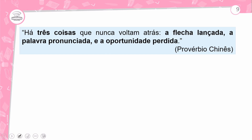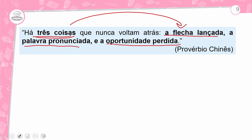Há três coisas que nunca voltam atrás: a flecha lançada, a palavra pronunciada e a oportunidade perdida. Primeiro veio o elemento de coesão 'três coisas', e depois apareceram os termos. Toda vez que o termo aparecer depois, é coesão por catáfora. Se o termo aparecer antes, é coesão por anáfora. Antes: anáfora. Depois: catáfora.